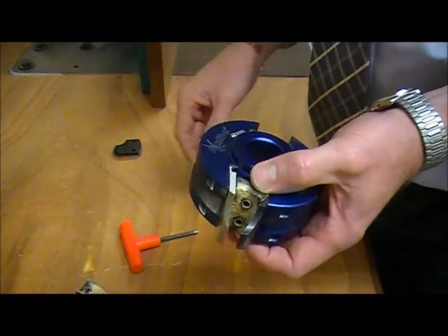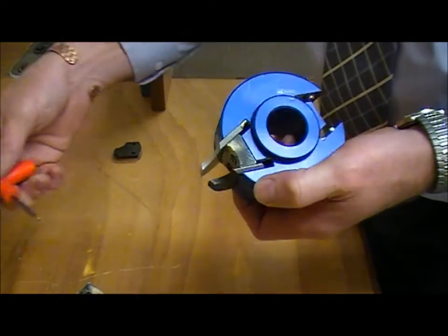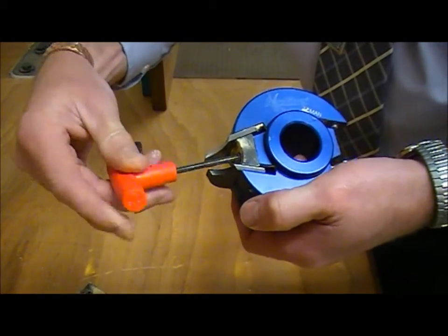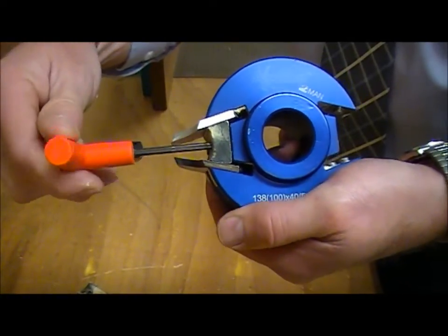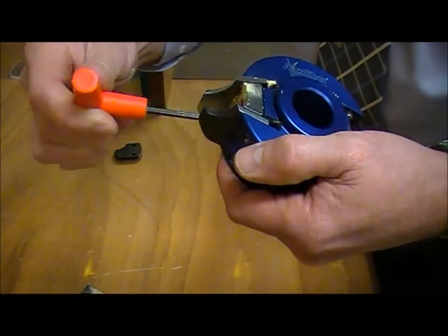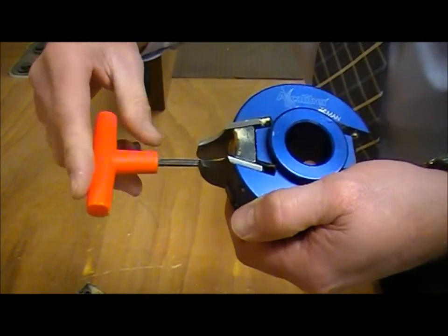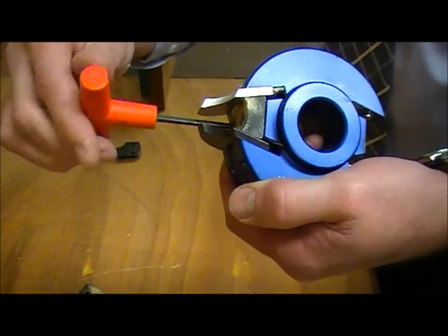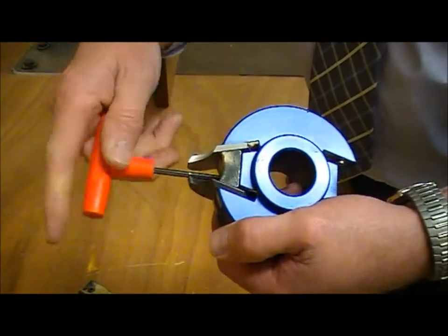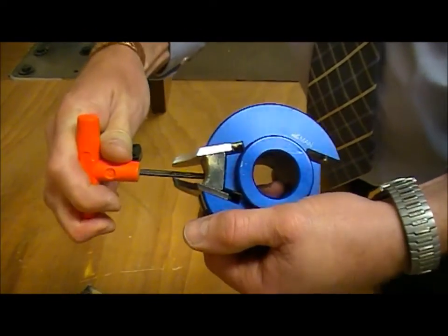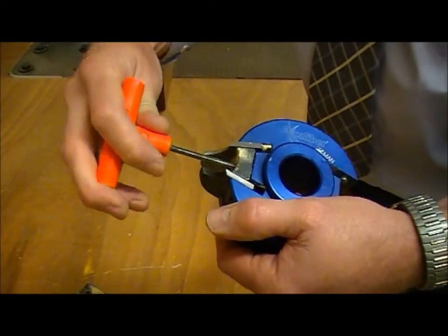And when we tighten this up, we can see how the wedge block pushes outwards and forces the cutter and the limiter onto the block itself. We don't need to over tighten these as the centrifugal force will hold it all in place once it's up and running.